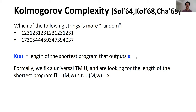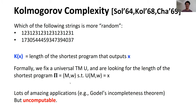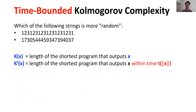More formally, we fix a universal Turing machine U and we look for the length of the shortest program π, which consists of a machine M and input w, such that U simulated on input (M, w) will output x. Kolmogorov complexity has amazing implications such as proving Gödel's incompleteness theorem, but unfortunately it is uncomputable. Therefore we look at time-bounded Kolmogorov complexity KT(x): the length of the shortest program that outputs x within time t(|x|). This KT(x) is computable, and when t is a polynomial, this problem is actually in NP.